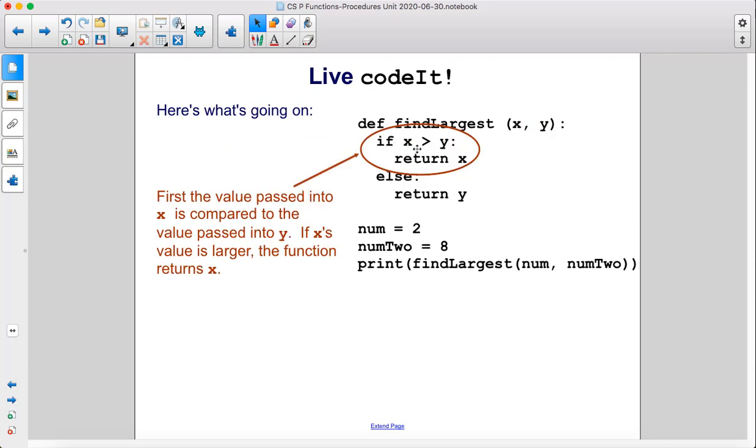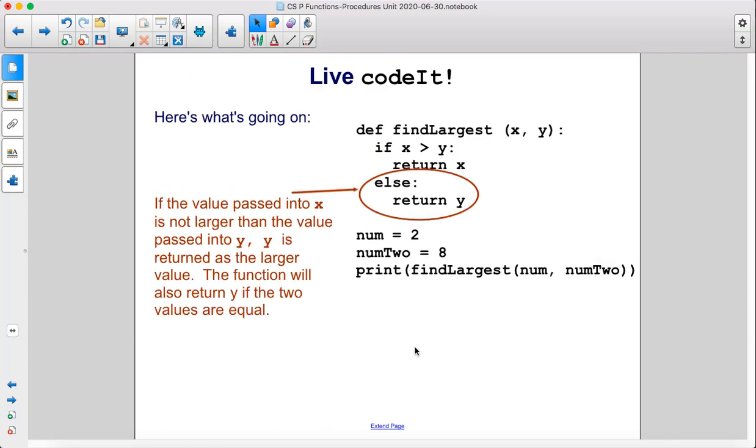First, the value passed into x is compared to the value passed into y. If x's value is larger, the function returns x. If the value passed into x is not larger than the value passed into y, y is returned as the larger value. The function will also return y if the two values are equal.